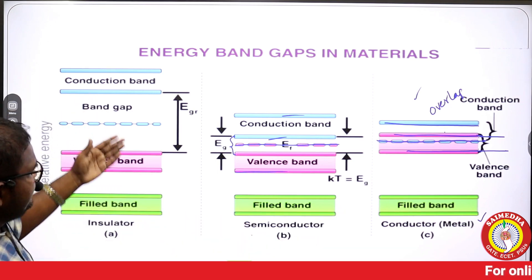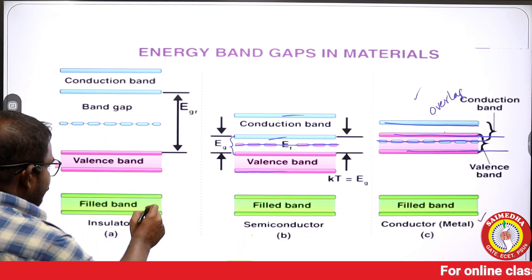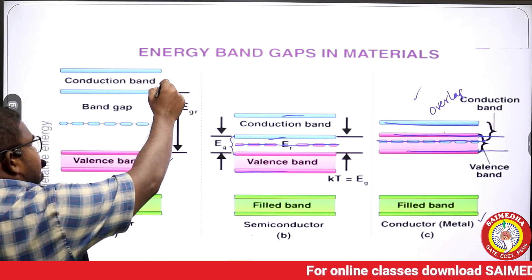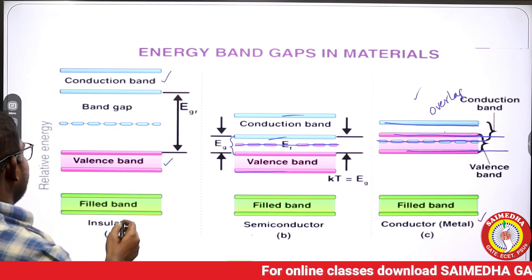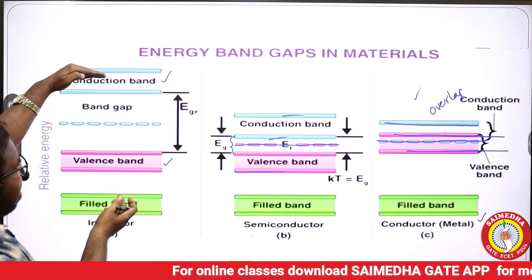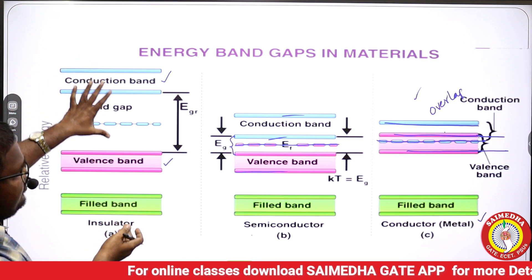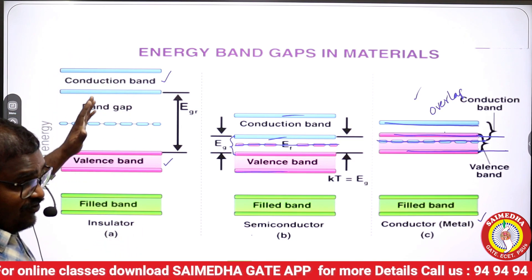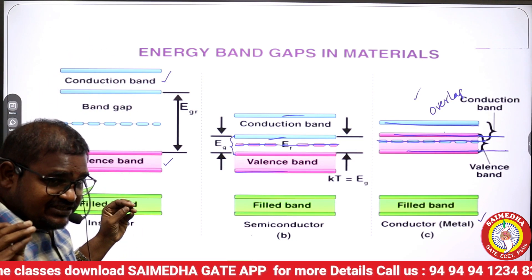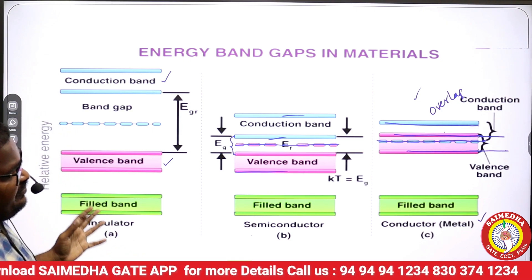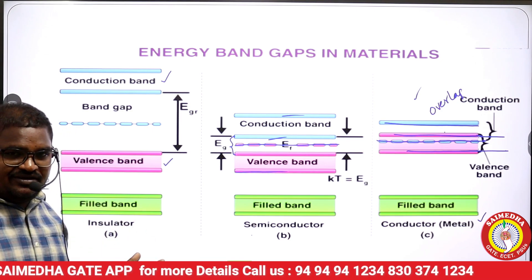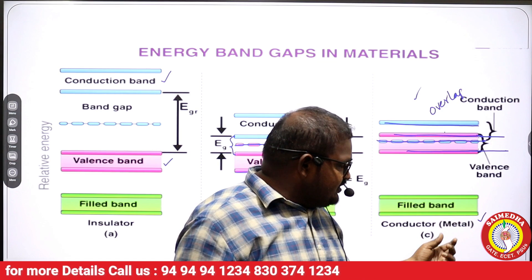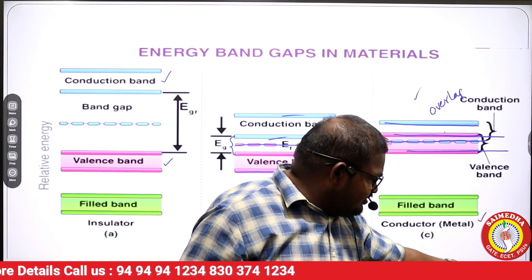For an insulator, there is a valency band and a conduction band with a large gap between them. Therefore, it has a very small number of free electrons.